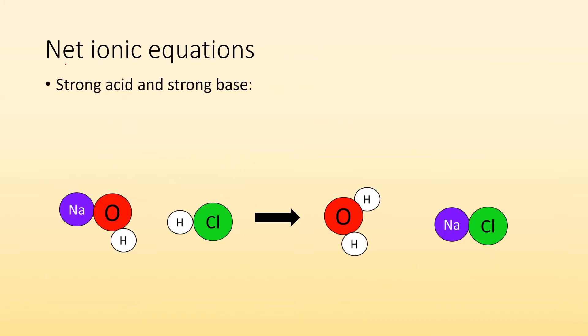So let's talk about net ionic equations. When we have a strong acid and a strong base reacting together like this, we can look at the molecular equation where we're showing what molecules we got. In this case, sodium hydroxide, hydrochloric acid, and we're going to make sodium chloride and water.